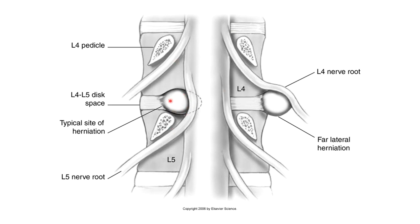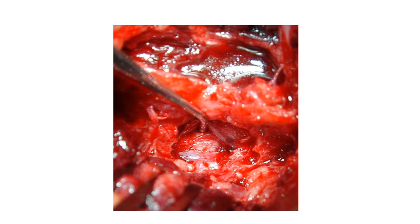Here's a diagram of the thecal sac and the exiting nerve root coming around the pedicles. At the level of L4-5, a paracentral disc herniation — the commonest type — pushes on the traversing nerve root and then the exiting L5 nerve root. That's why the L4-5 disc gives you L5 symptoms and the L5-S1 disc gives you S1 symptoms. You can see a four-millimeter fragment — the thecal sac has been pulled medially, there is the nerve root, and there's a piece of disc coming through between the thecal sac and the exiting nerve root, with a small epidural vein on top of that disc.